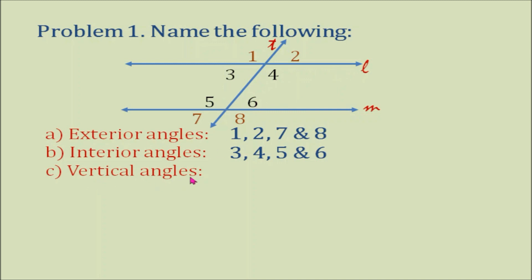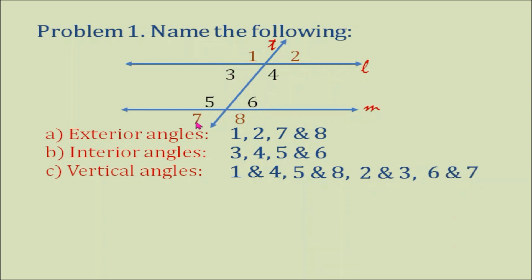How about vertical angles? We have many vertical angle pairs here: angles 1 and 4, angles 5 and 8, angles 2 and 3, and angles 6 and 7. Let's take note that vertical angles are congruent.